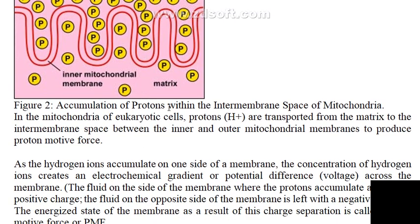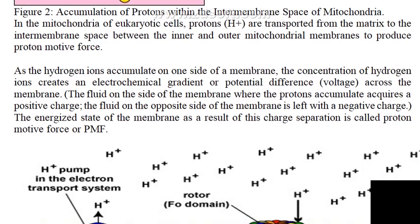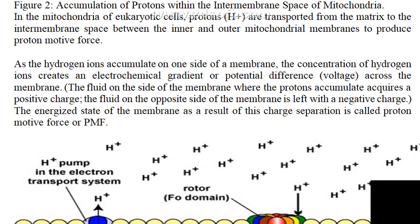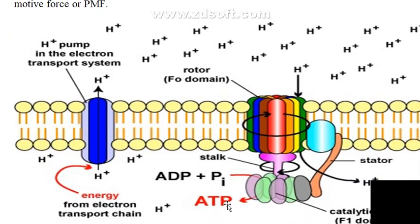Because of the accumulation of protons within the intermembrane space of mitochondria or the periplasmic space of bacterial cells, it creates a proton gradient and an electrochemical gradient. Due to this potential difference, the inside of the matrix or cytoplasm carries a negative charge, while the outside — the intermembrane space or periplasmic space — carries a positive charge, because protons carry a positive charge.